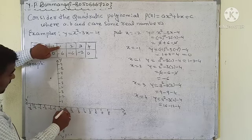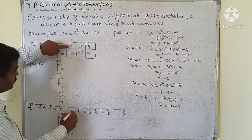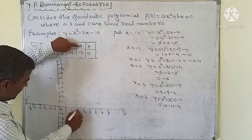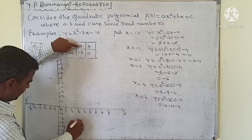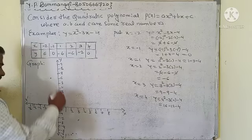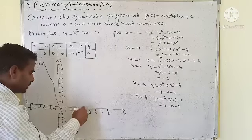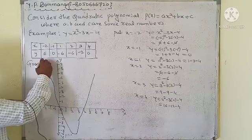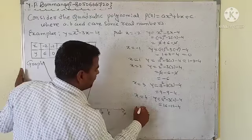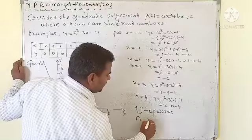Now plot the points: x = -2, y = 6; x = -1, y = 0; x = 1, y = -6; x = 2, y = -6; x = 3, y = -2; x = 4, y = 0. The graph goes upward and then downward, forming a beautiful parabola shape.